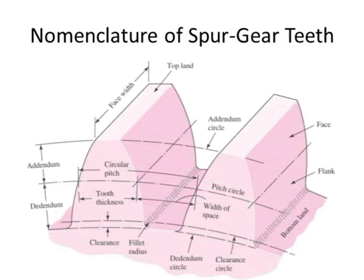Now let's talk about the nomenclature of the gear. The top portion of the teeth is called the top land. The bottom area of the teeth is called the bottom land. Since it is a wheel upon which teeth are mounted, if we look at the front view it looks like a circle. The circle that passes through the top land is called the addendum circle.